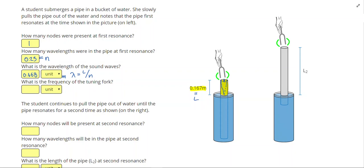Then it says what is the frequency of the tuning fork? I can get the frequency by using the wave equation. So I can use the frequency equals velocity divided by lambda. Since this is a wave in the air, I know the velocity is 343 meters per second, and I'm dividing that by 0.668 meters. And that gives me this tuning fork, it must be 513 hertz.